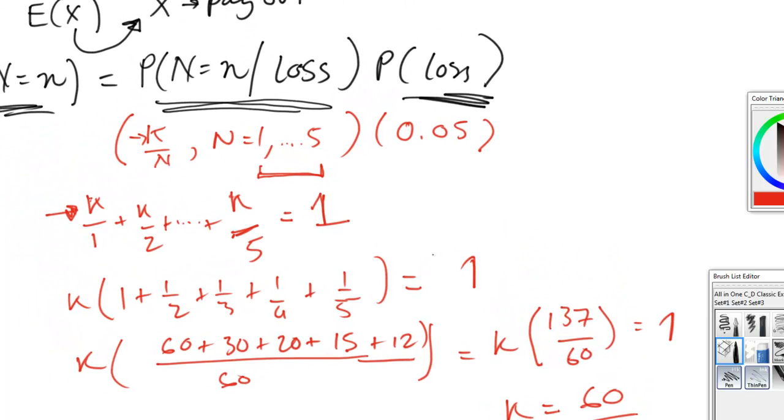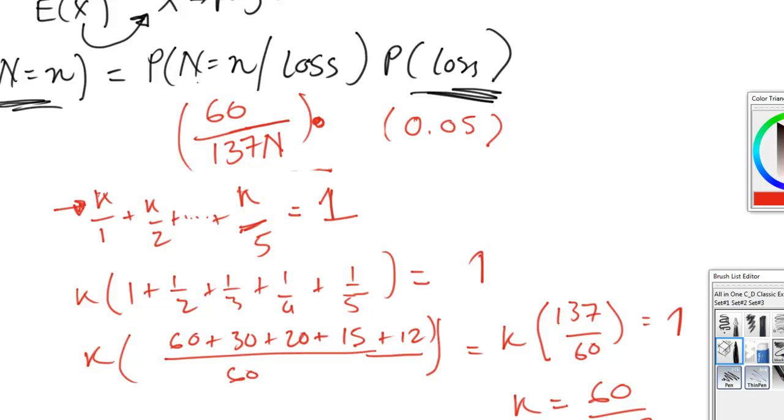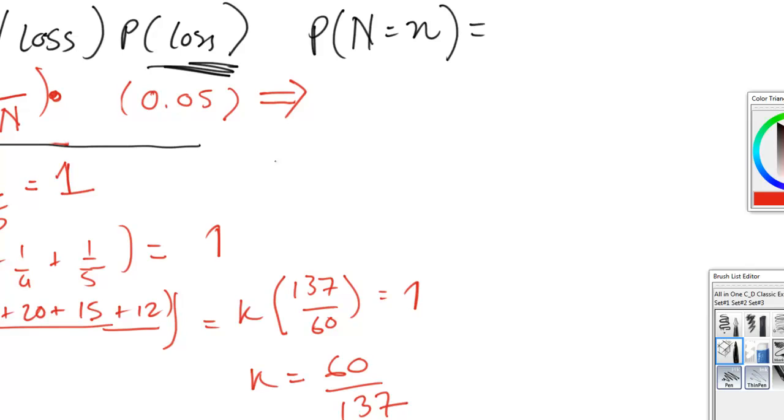So now we can go back to where we were and we can input our new information. So in here, we know that it's going to be 60 over 137n. That's going to be 60 over 137n. That's going to be our probability of a given amount of loss given that there is a loss. So this means that our probability of a loss n equal to n is going to be, if we multiply the 3 over 137 out, that's going to be 3 over 137n.